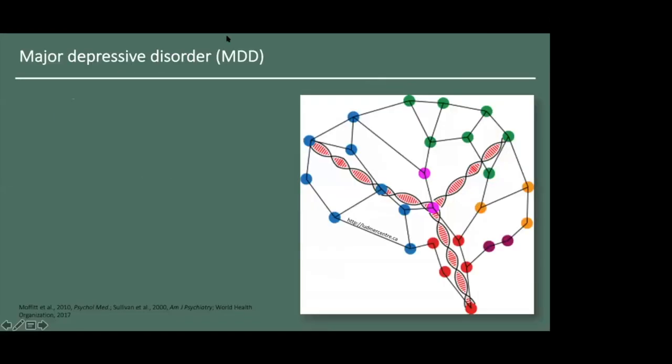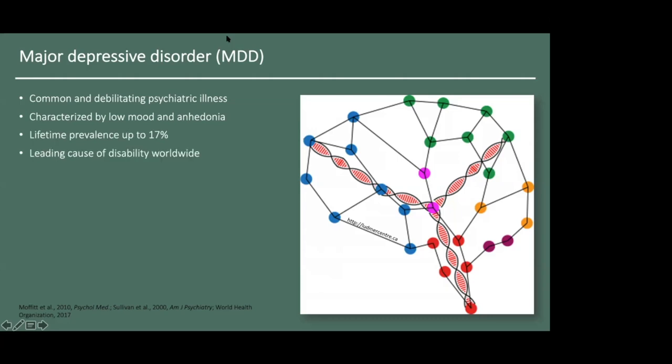Major depressive disorder or depression is a common and debilitating psychiatric illness characterized by low mood and anhedonia. It has a lifetime prevalence of up to 17% and constitutes the leading cause of disability worldwide. Although depression is moderately heritable, it is highly polygenic and its biological basis remains poorly understood.